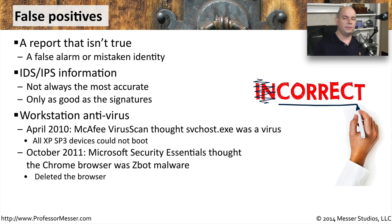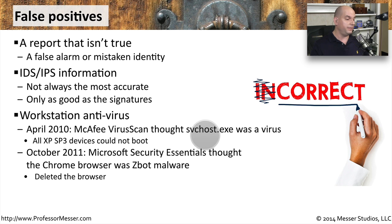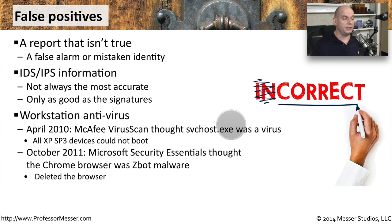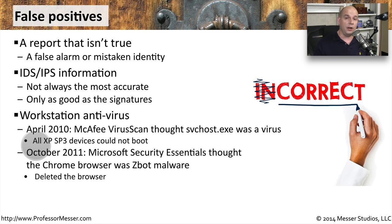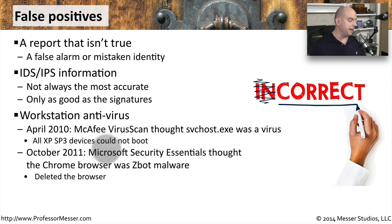False positives can also occur with antivirus or anti-malware software. For instance, in April 2010, McAfee VirusScan thought that the Windows system program svchost.exe was a virus. That was certainly a false positive — svchost.exe is an integral part of the Windows XP operating system. McAfee removed that file, which meant that all Windows XP SP3 devices could not boot. You had to correct that before rebooting the machine, or once it was rebooted, you had to go through a recovery process.